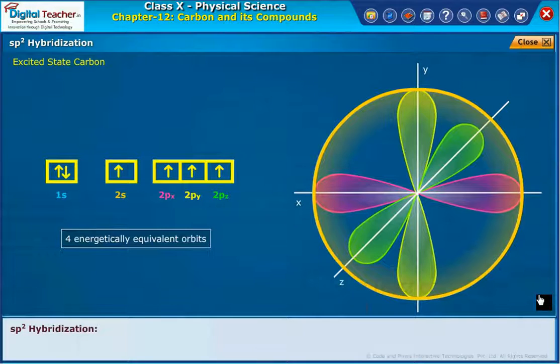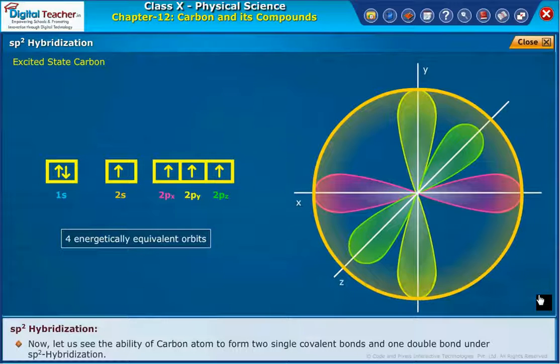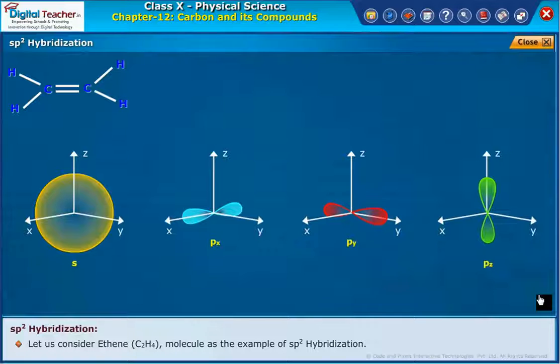SP2 hybridization. Now let us see the ability of carbon atom to form two single covalent bonds and one double bond under SP2 hybridization. Let us consider ethene C2H4 molecule as the example of SP2 hybridization.